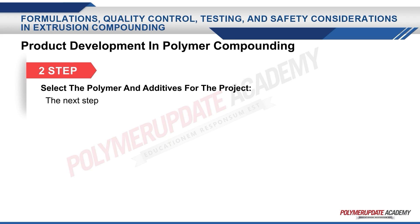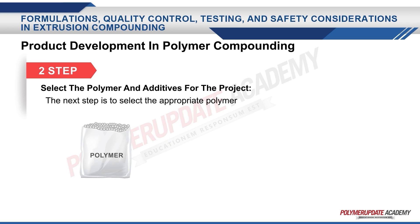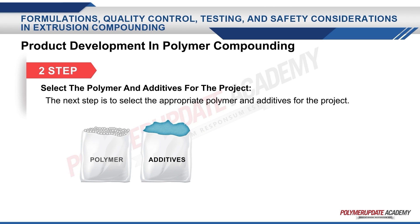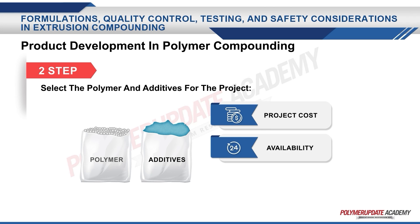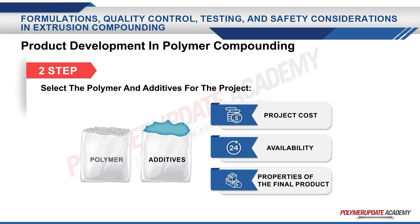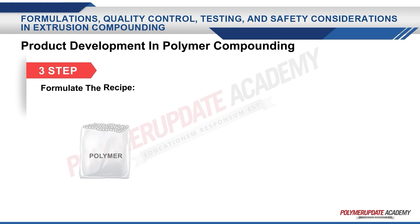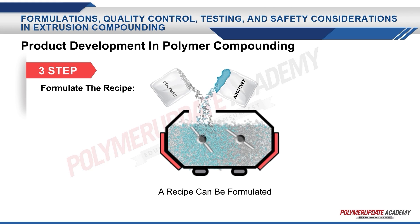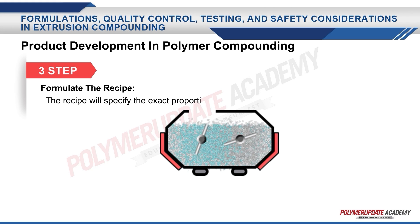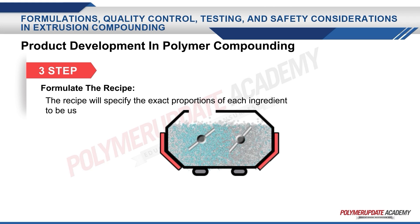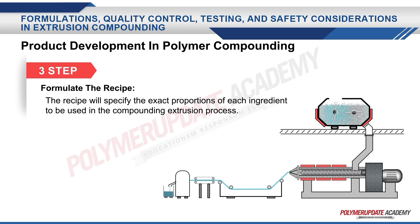The next step is to select the appropriate polymer and additives for the project. This involves considering factors such as the cost, availability, and the desired properties of the final product. Once the polymer and additives have been selected, a recipe can be formulated. The recipe will specify the exact proportions of each ingredient to be used in the compounding extrusion process.